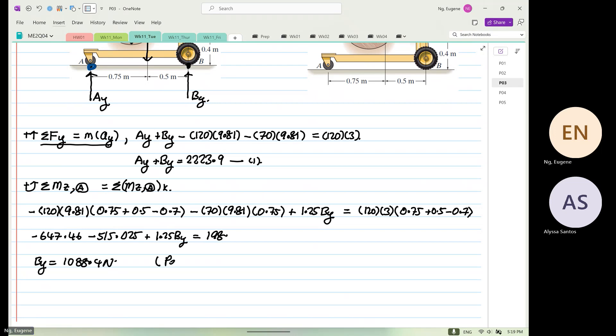And per wheel will be equal to 1088.4 divided by 2. So, this is equal to 544.2 newtons. And then we can find what is Ay. We know that Ay will be 2223.9 minus 1088.4, so it's equal to 1135.5 newtons. And then per wheel, you just need to divide by 2 because it's loaded in a symmetrical way, so it's 567.75 newtons. I'll see you guys on Thursday.